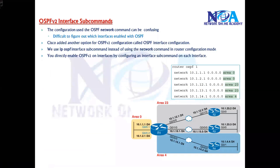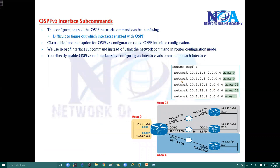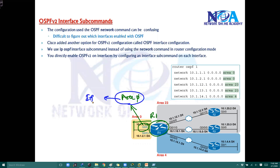The problem with this configuration method is you need to really figure out, like in this topology, if I want to advertise this particular interface in area zero, then I need to figure out what is the interface IP address, and again I need to figure out whether you want to address that particular complex subnet or just an individual IP.